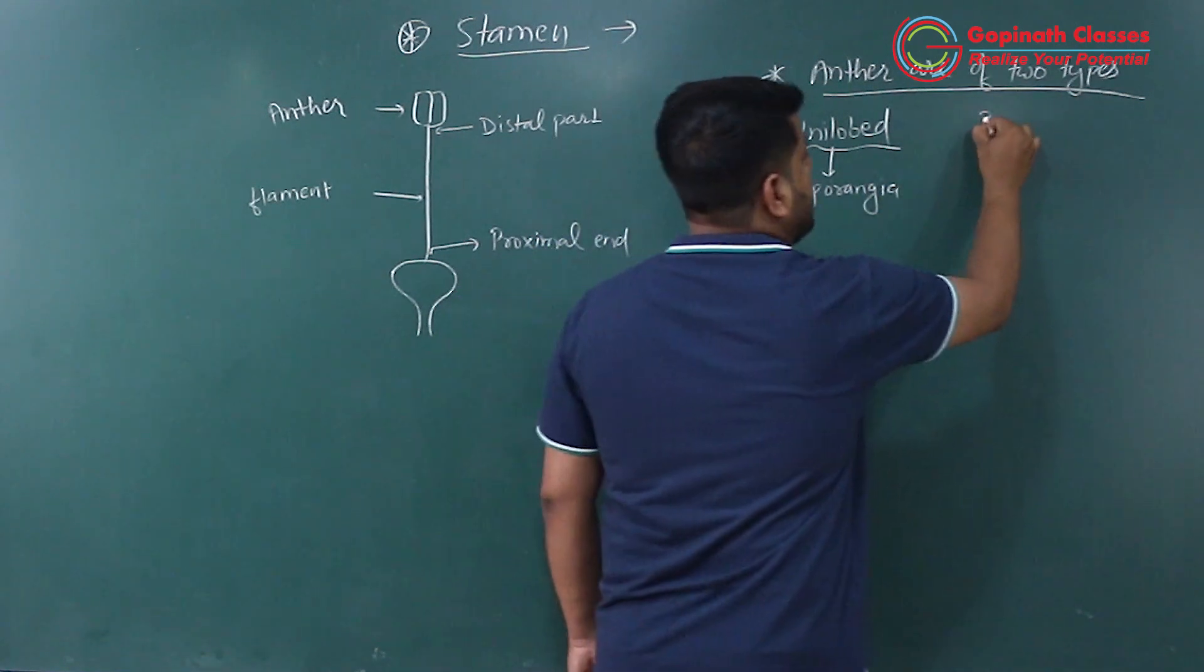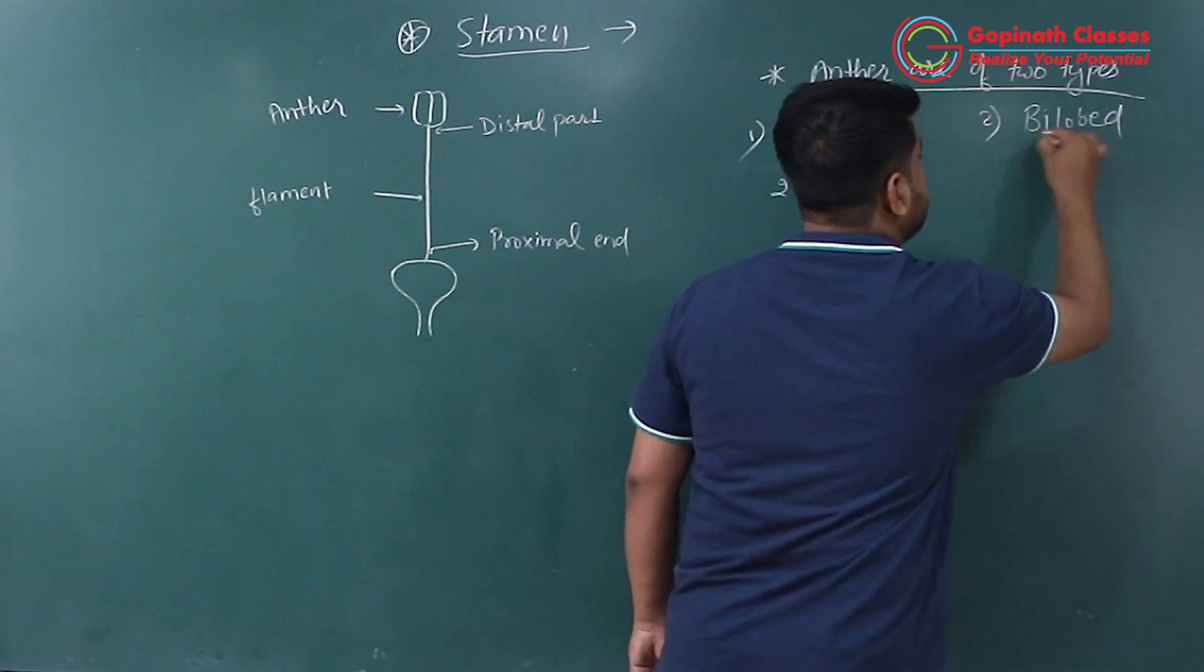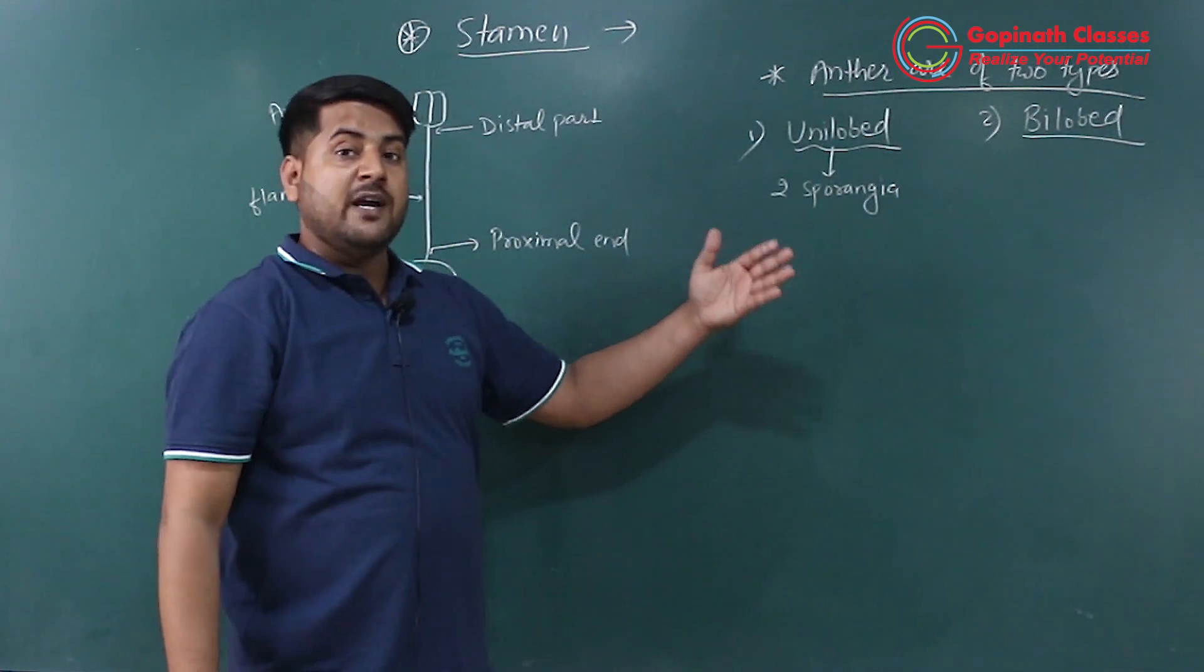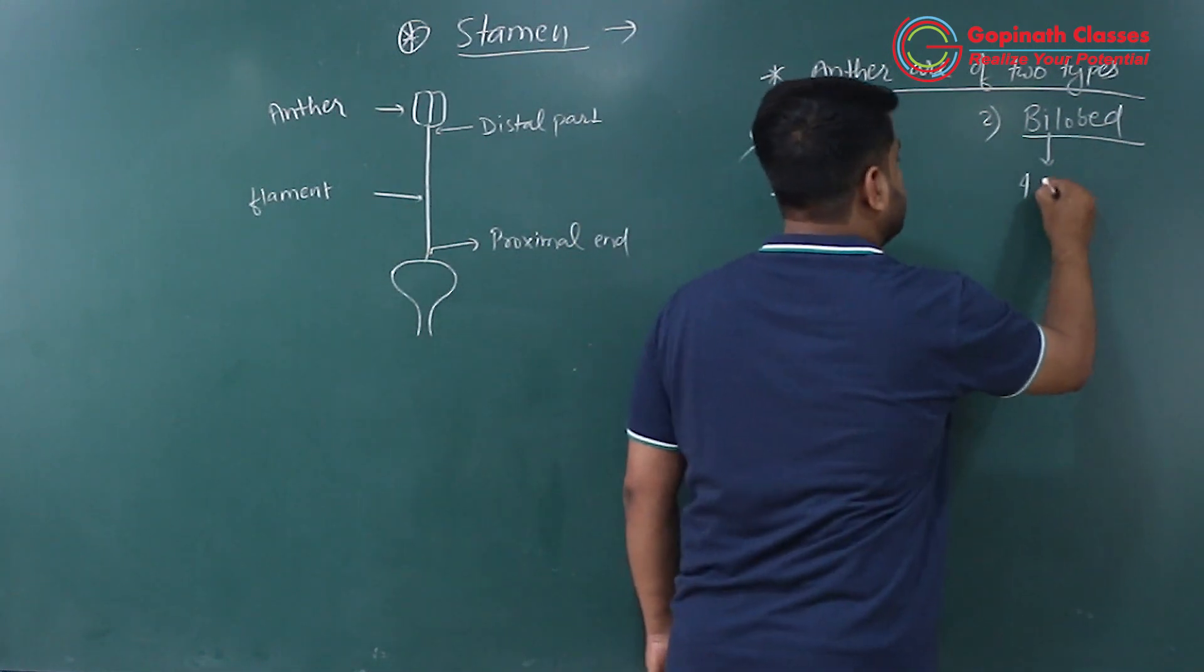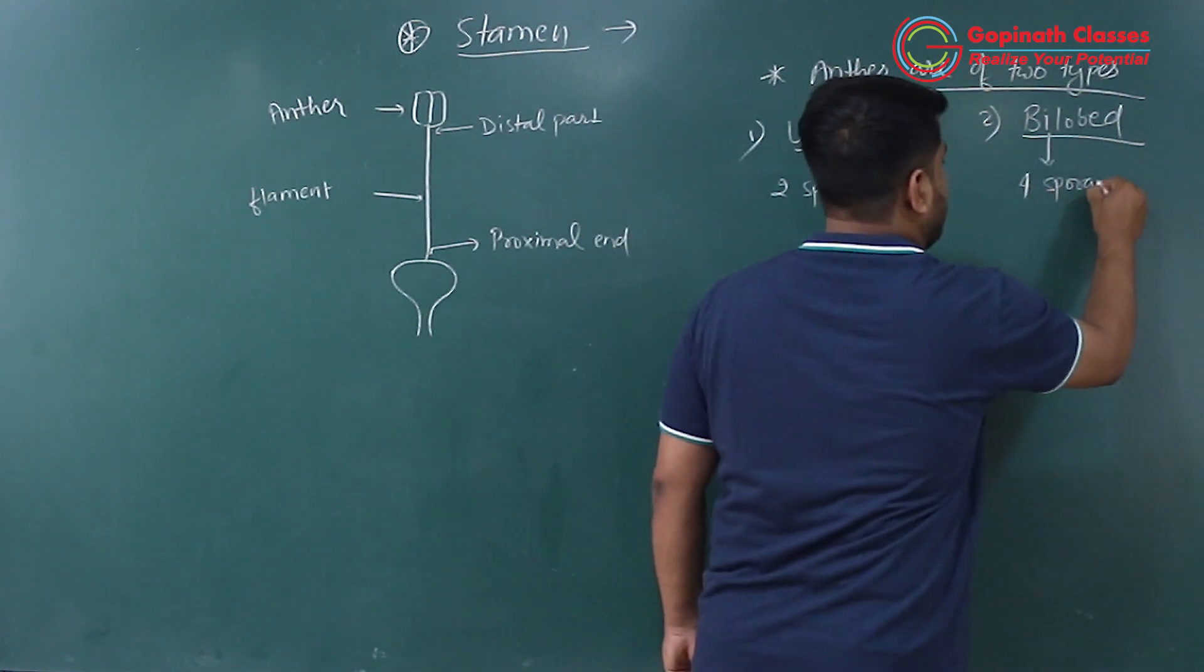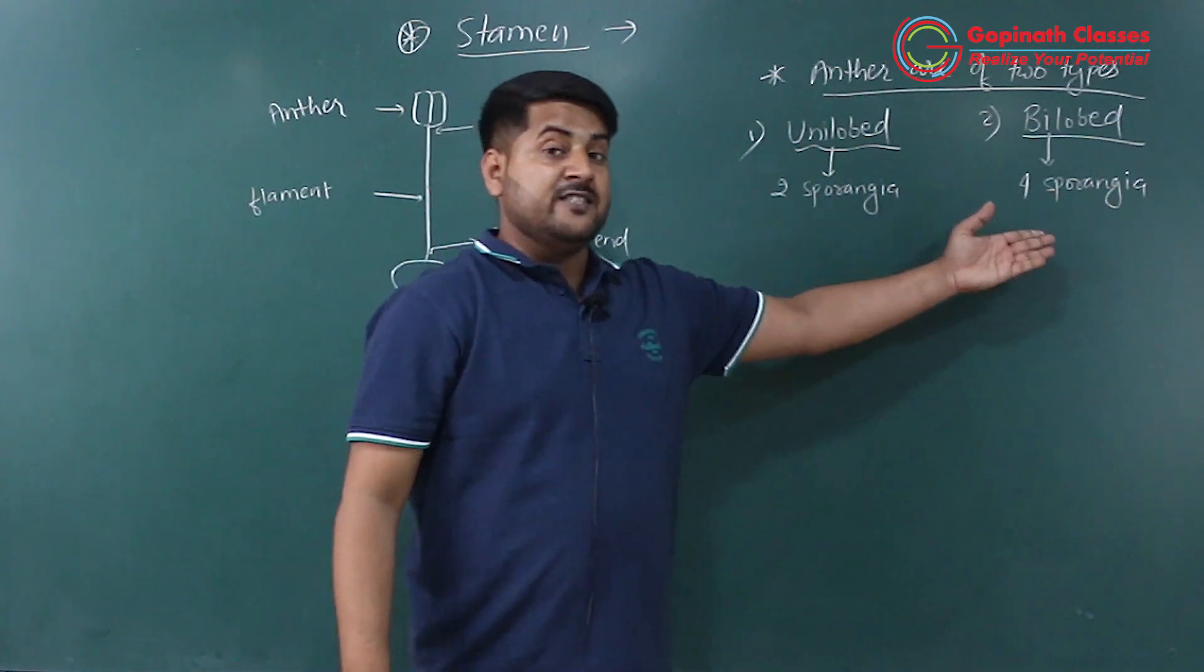And the other type is bilobed, the most common type. Unilobed means two sporangia, so bilobed means four sporangia. This is tetrasporangiate.